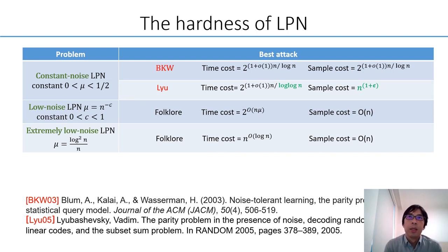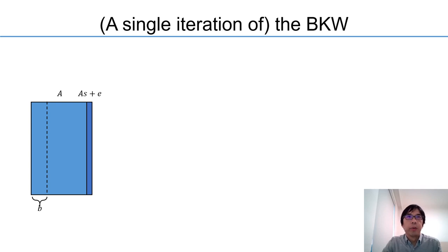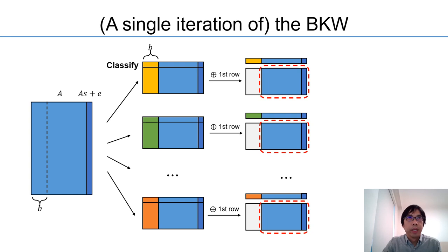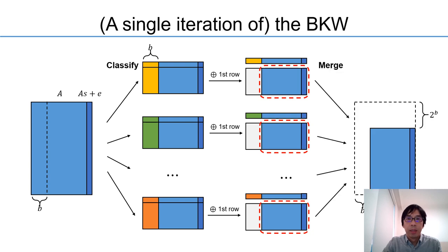And there are other variants of LPN where the noise rate decreases with respect to the dimension, but they are not the focus of our paper. Let's recall the original BKW algorithm. It works in iterations. In each iteration it classifies the samples based on the values of the first b-bit of the coefficient vector, and within each group it cancels the first b-bit by subtracting them with the first vector. Therefore, each iteration reduces the dimension by b-bit and reduces the number of samples by 2^b and doubles the noise rate.